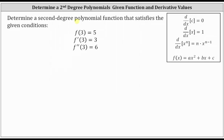Determine a second degree polynomial function that satisfies the given conditions: f of three equals five, f prime of three equals three, and f double prime of three equals six.